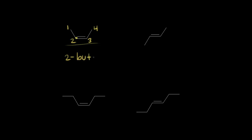Let's say we were asked to name the molecule on the top left. We would start by numbering our carbons: carbon one, two, three, and four. Notice we have a double bond starting at carbon two. So the name of this molecule would be 2-butene — 'two' because the double bond starts at carbon two, 'but' because we have four carbons, and 'ene' because we have a double bond present in the molecule.